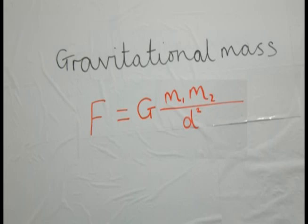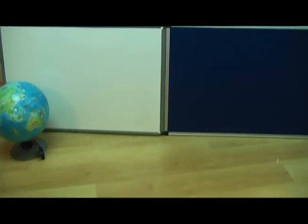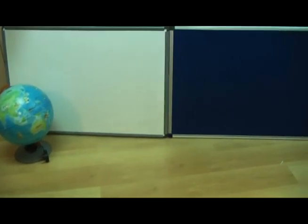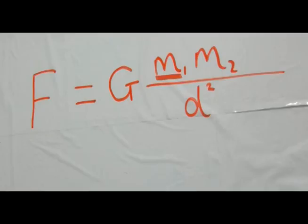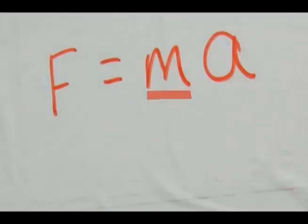Now, according to Newton's gravitational law, f equals g times m1 times m2, all divided by d squared. So the force is inversely proportional to the distance squared. So if you double the distance, the force would be reduced by a quarter. It makes sense that the m in this equation would be exactly the same as the m in f equals ma.